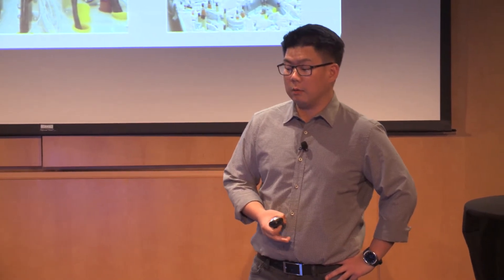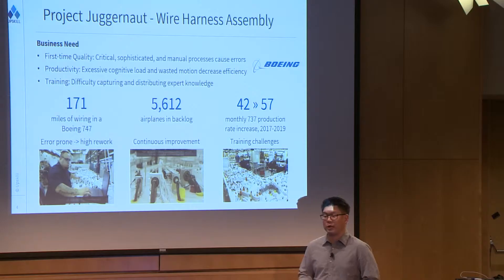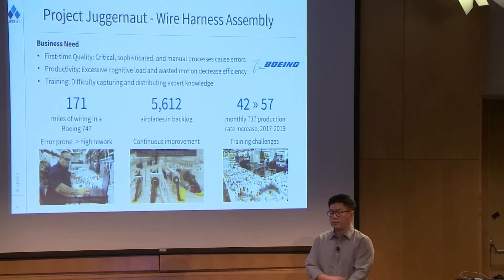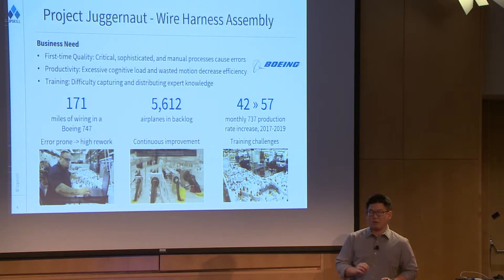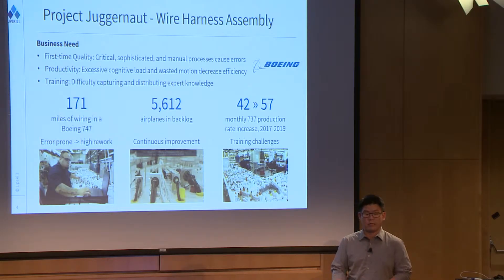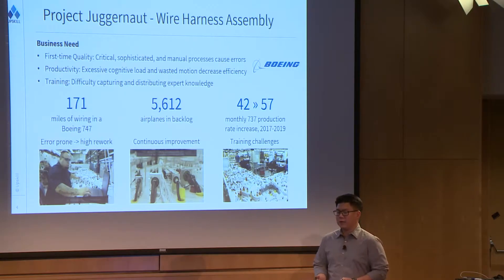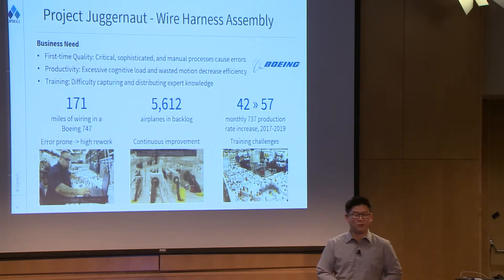Let's talk about what we did at Boeing. Boeing called this project Juggernaut, which is an appropriate name given the sheer breadth of how this can transform how they're doing the work using assisted reality within their enterprise. The business need is obvious for any organization looking to deploy augmented reality technology: quality, productivity, and knowledge transfer. Wire harness assembly is a pretty manual process — it still requires a human in the loop, it's highly variable, and it's high enough value that you really do need quality and redundancy. The last thing you want is for one of those wires to fail when you're 35,000 feet in the air.